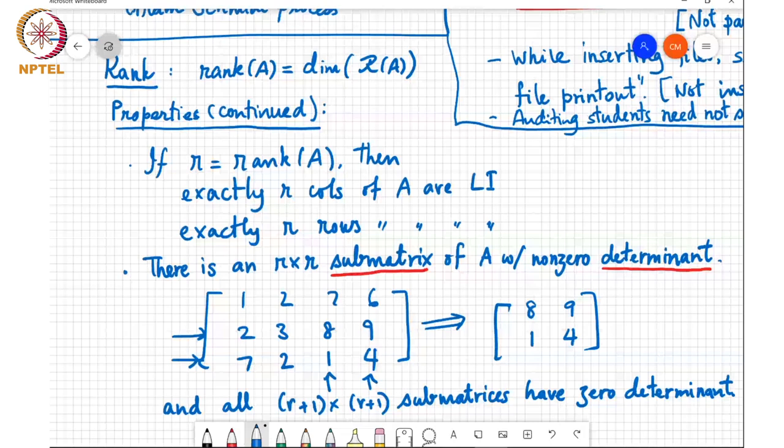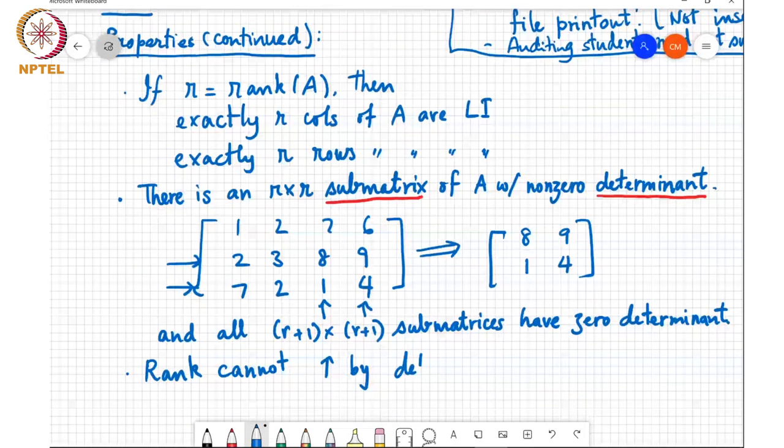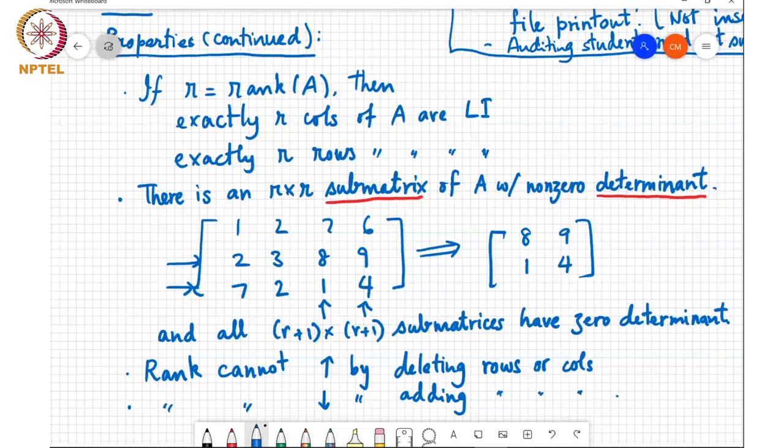Another obvious property is that the rank cannot increase by deleting rows or columns, and similarly, rank cannot decrease by adding rows or columns, because when you add rows or columns, you can only increase the span or the dimension of the span of the columns of the matrix. And so the rank cannot decrease if you add a row or a column to the matrix.